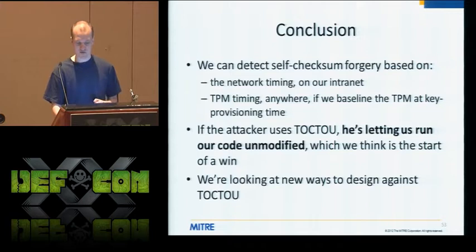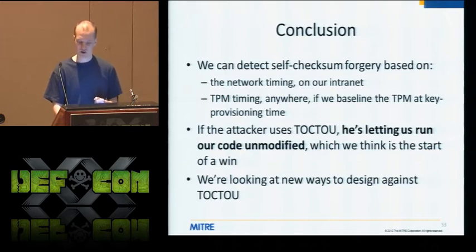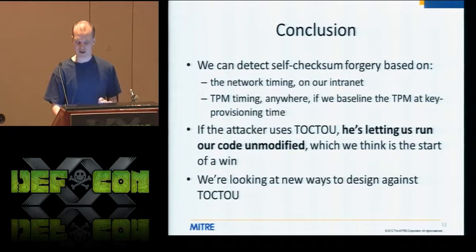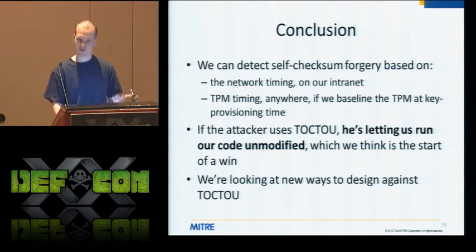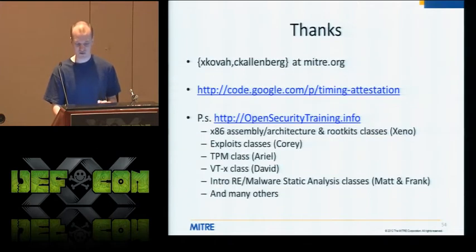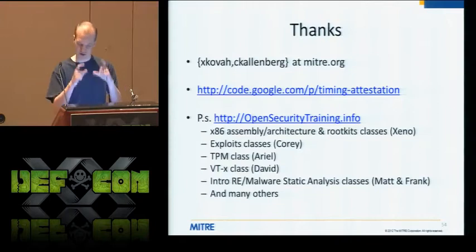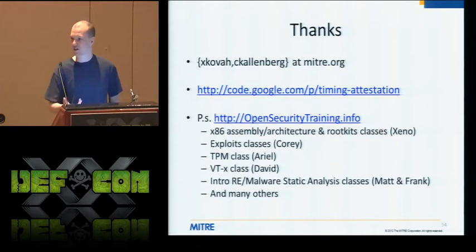In conclusion, we have a more practical system running on Windows XP and Windows 7. We have a system where we can detect modification of our self-checking code — detect it on the intranet based on round-trip time, and detect it sort of arbitrarily based on TPM trusted stopwatch if we baseline the time for a specific system. We know the attacker can get around it with TOCTOU attacks, but the key point is that if he's doing a TOCTOU attack, our code is unmodified — so in the academic sense we've won, but we still want to find ways to mitigate TOCTOU attacks. You can check out the code on Google Code, and we've got videos rather than README files showing exactly what to do to install our software, validate our results, run it on your own machines, and tinker around with the assembly code to see if you can make it go faster than us.